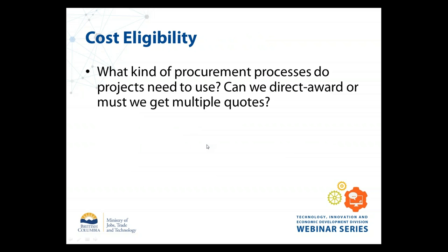Moving on to cost eligibility. What kind of procurement processes do we need to use? Can we direct-award to a consultant we've worked with on an earlier phase, or do we need to go to tender? The procurement process depends on the internal processes of the organization that receives the funding. Provincial requirements are not passed along to applicant organizations. Once funding is provided, it's up to each organization to follow its own procurement procedures. Having multiple quotes included with your application strengthens it, but it is not a requirement.